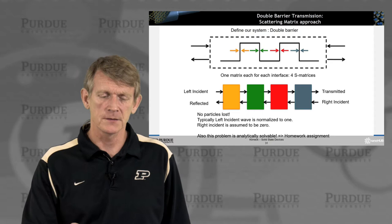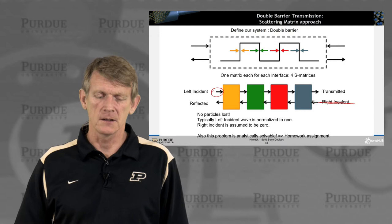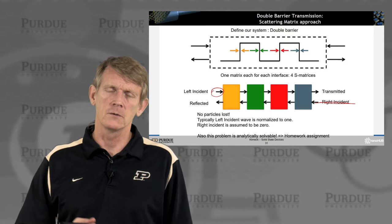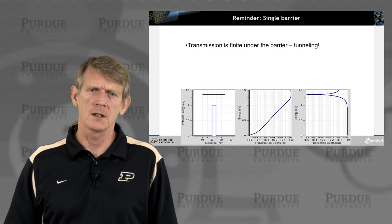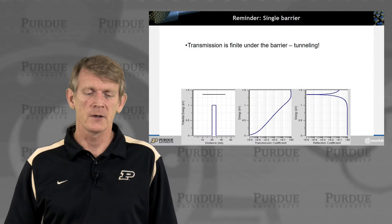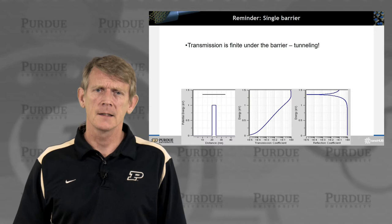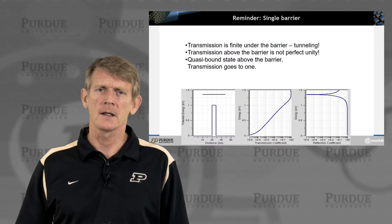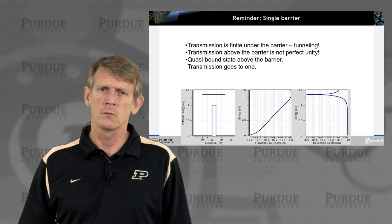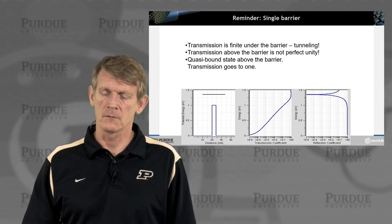We typically set the right incident wave to zero, and we can solve this analytically — I invite you to do this as an assignment. What's more important is to interpret the results. Here's a brief reminder: transmission is finite under the barrier for a single barrier structure, and it is not perfectly unity above the barrier. There seem to be quasi-bound states above the barrier where transmission goes to one and reflection goes to zero, indicating transmission is not perfectly one across a wide range of energy.